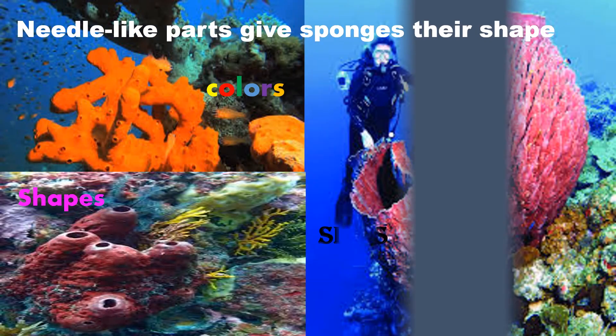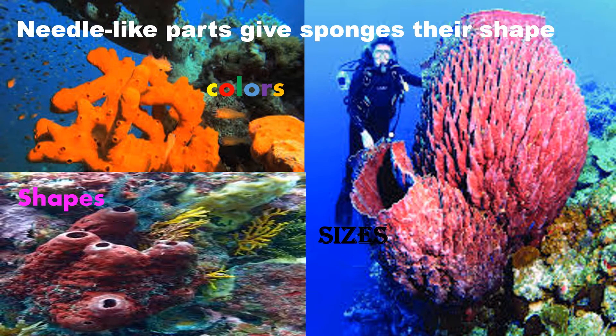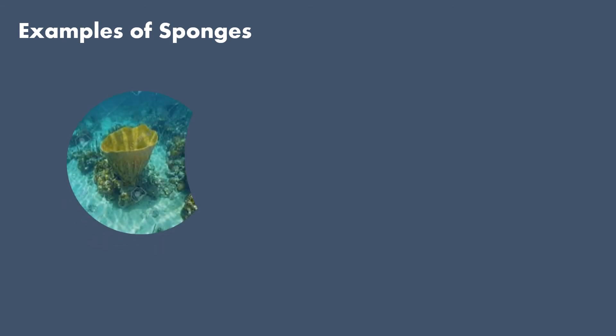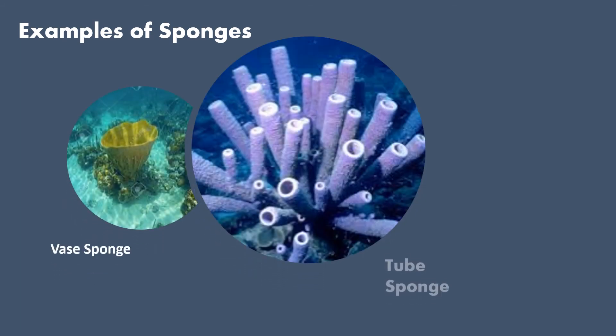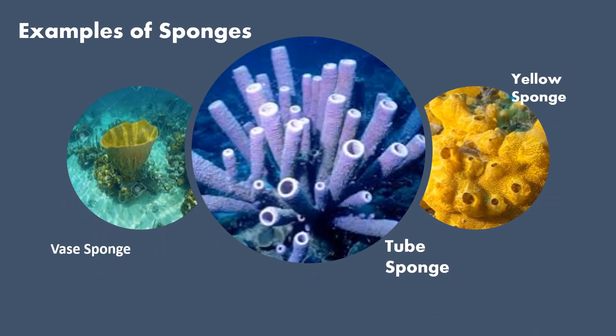There are many species of sponges living in oceans all across our planet. Needle-like parts give them their shape. Different species of sponges come in different colors, shapes, and sizes. Here are some examples: a vase sponge, tube sponge, and yellow sponge.